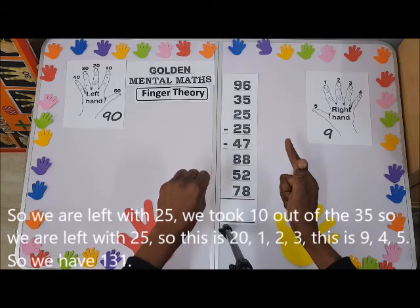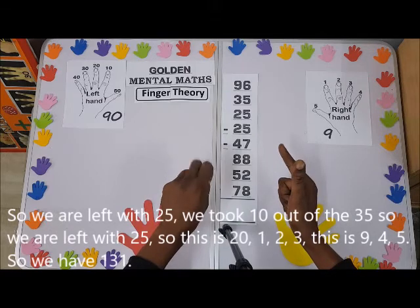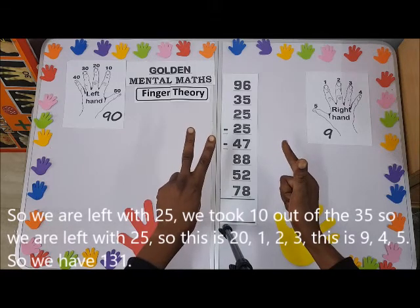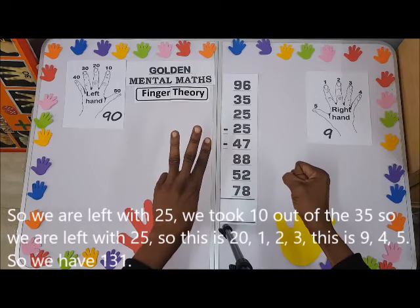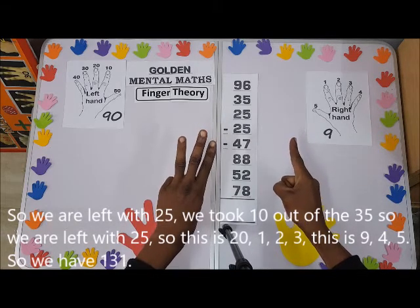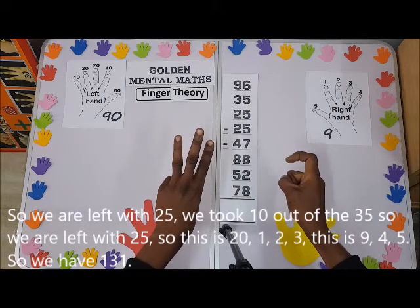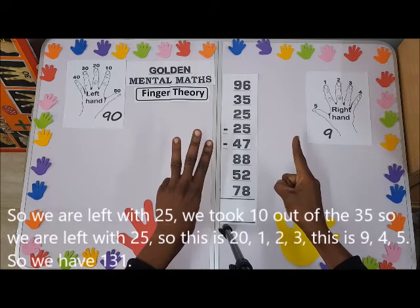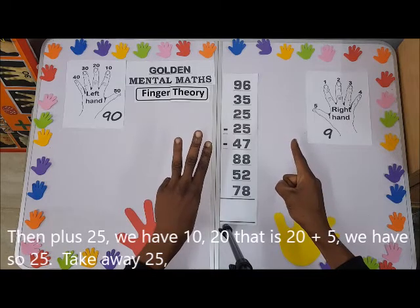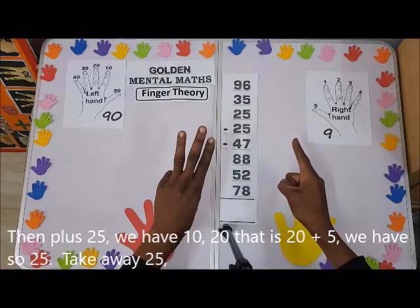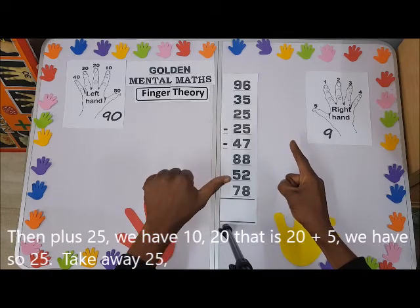We are left with 25 — we took 10 out of the 35, leaving 25. So counting: 1, 2, 3... this is 9, 4, 5. We have 100 and 31: that is 131. Then plus 25, we have 10, 20.